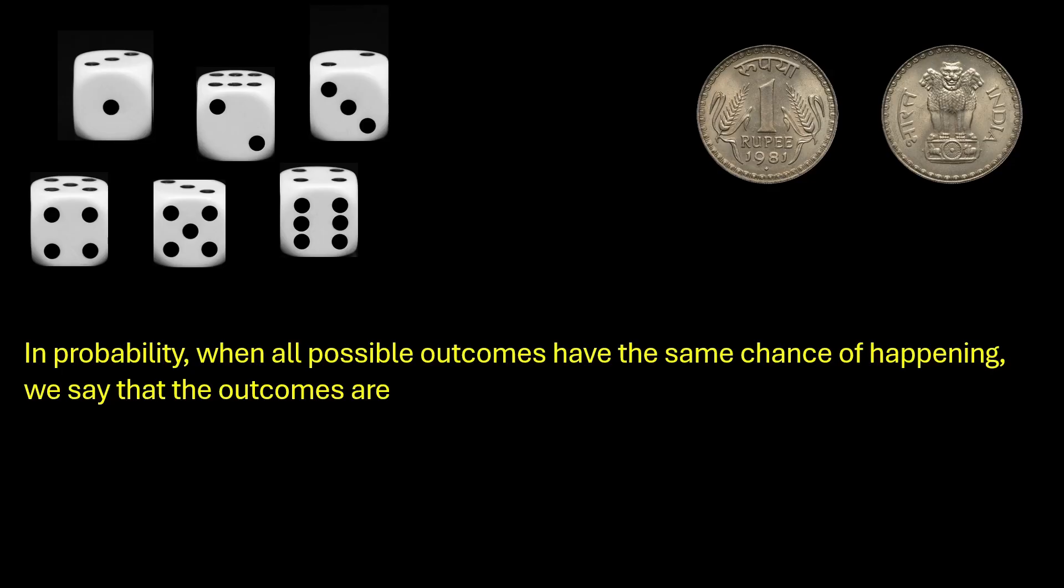In probability, when all the possible outcomes have the same chance of occurring, we say that the outcomes are equally likely. That's the term we use. Equally likely outcomes mean that all the possible outcomes have equal chance of occurring.